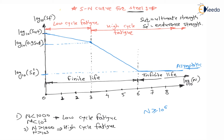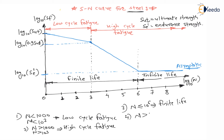Whenever revolutions completed by a component are less than or equal to 10⁶, it is considered as finite life of the component. Whenever number of revolutions completed before failure are more than 1 million (10⁶), it is considered as infinite life of the component.